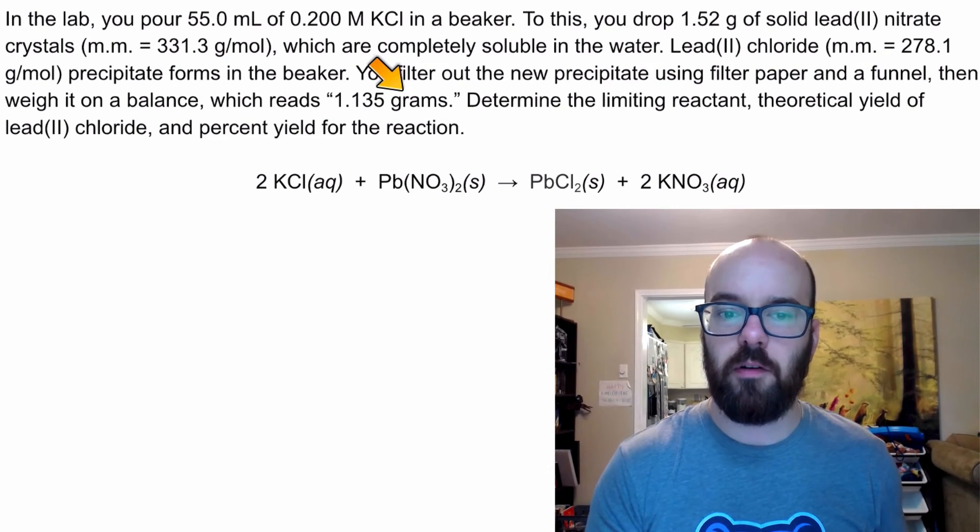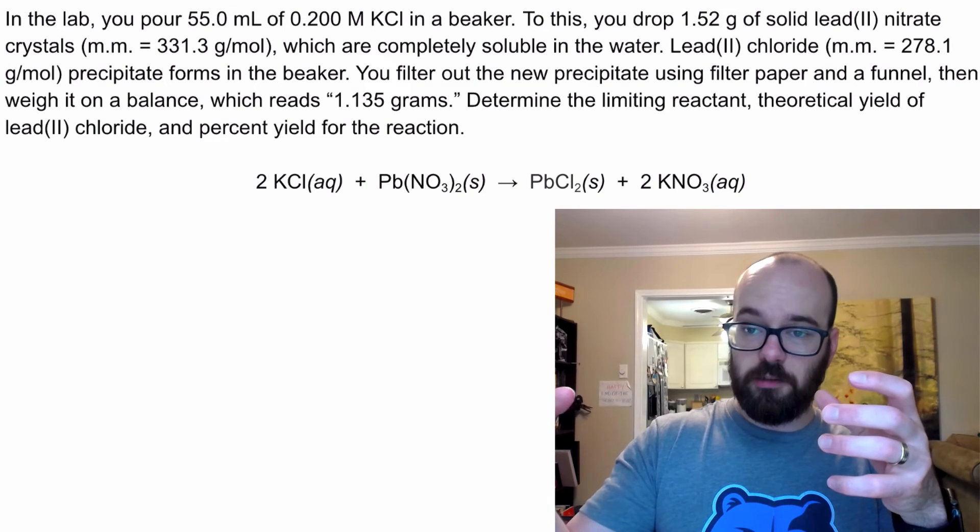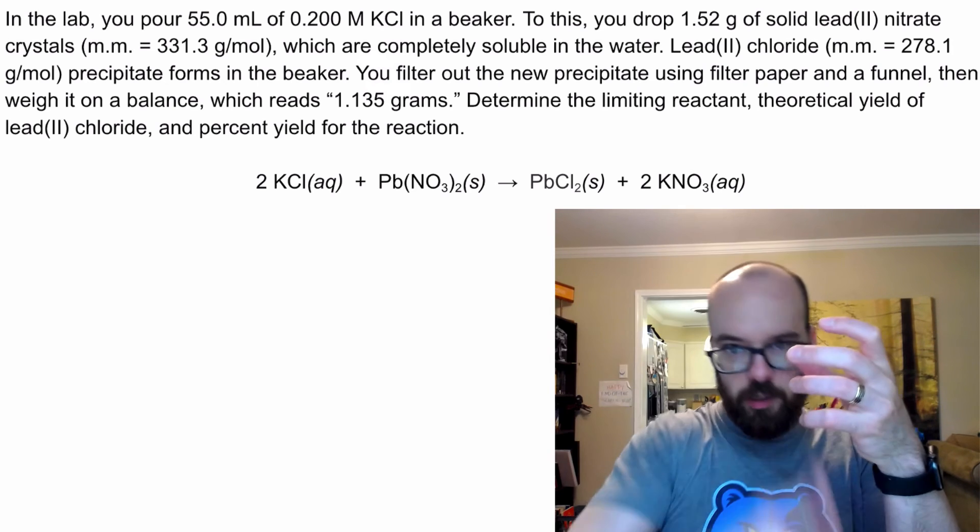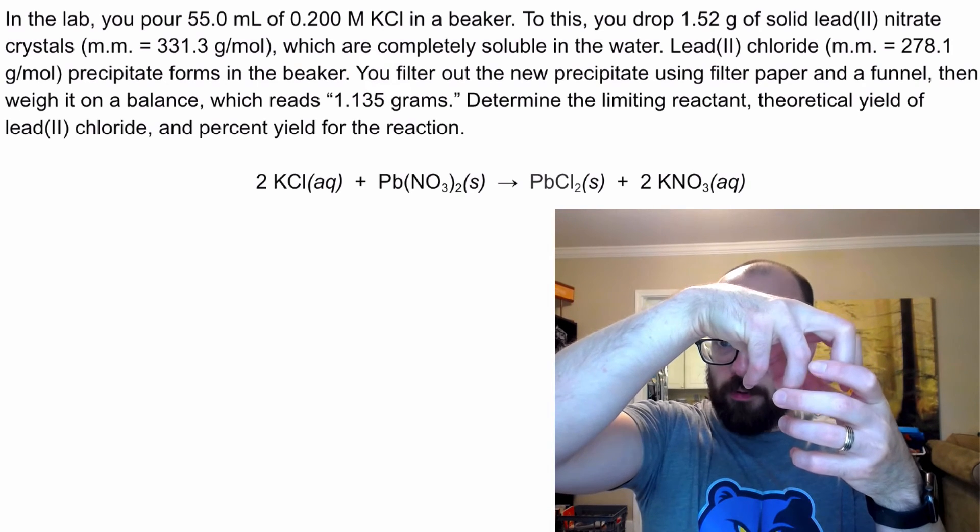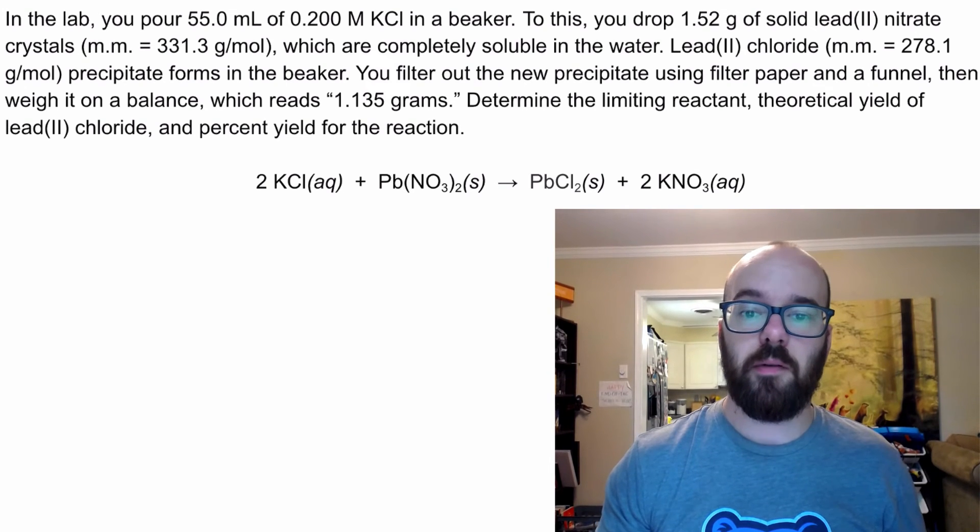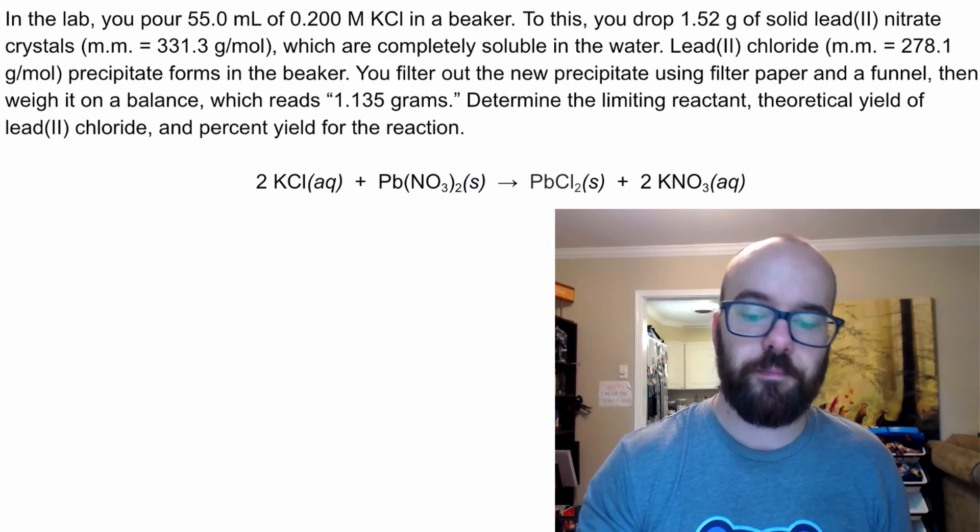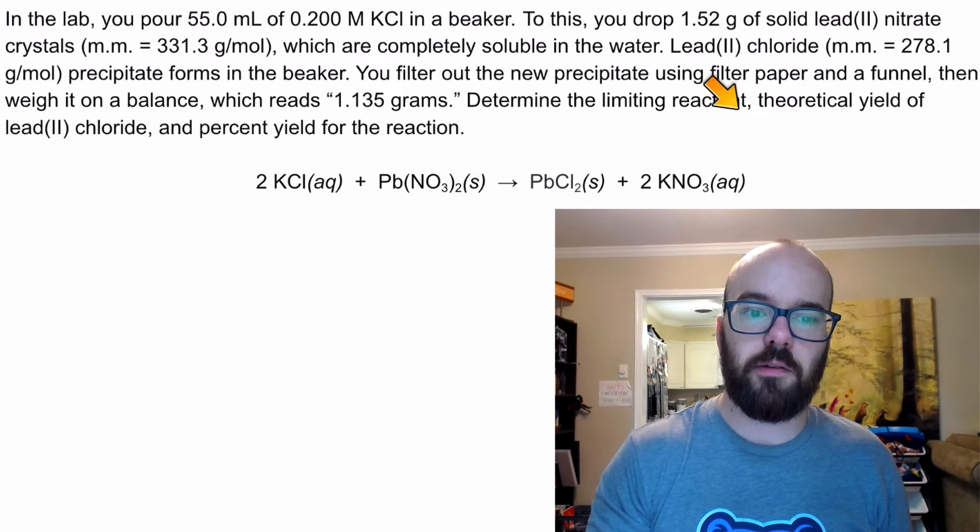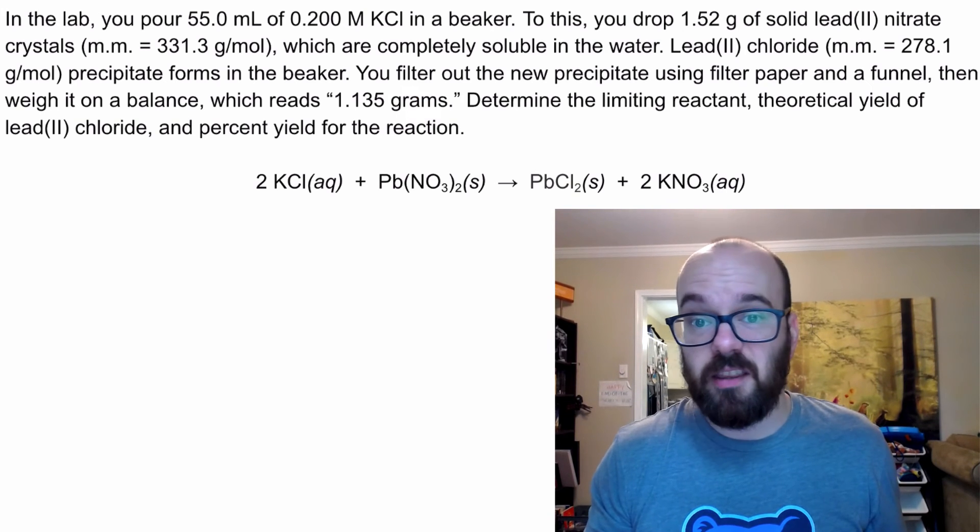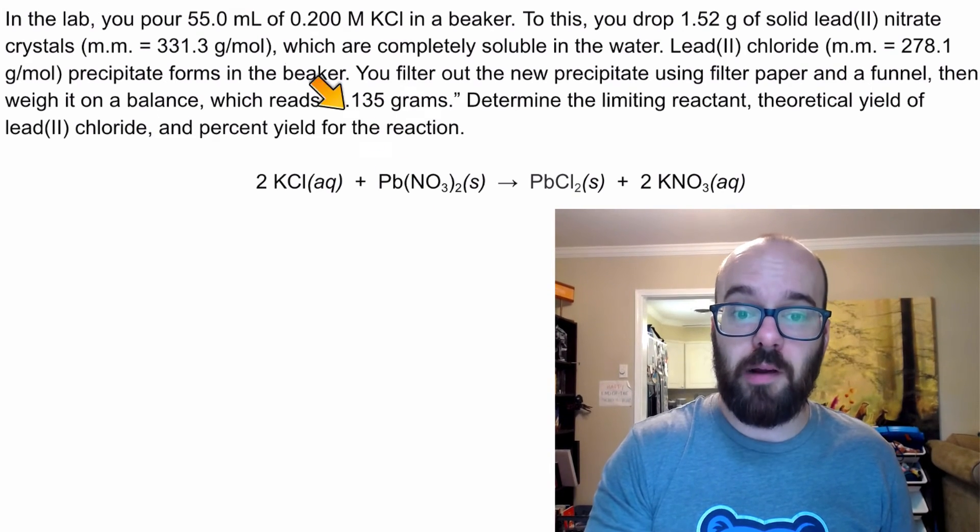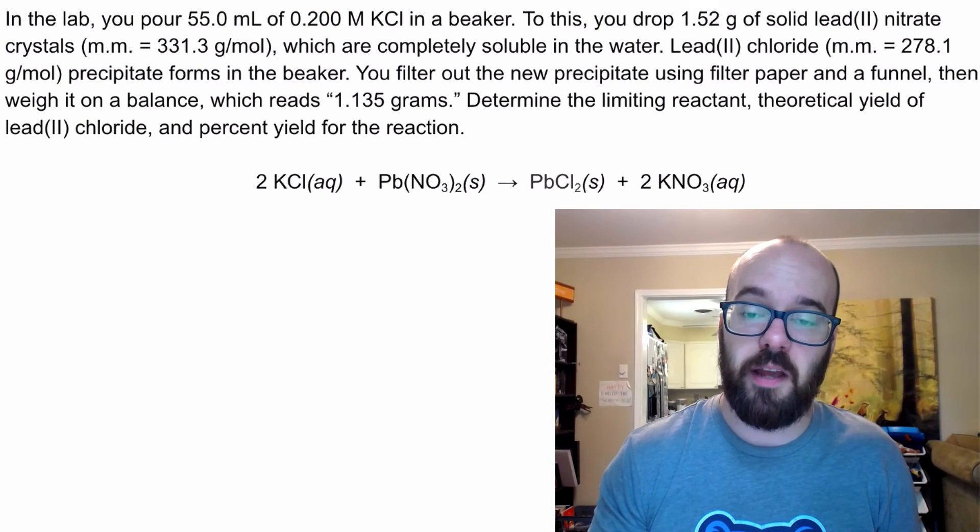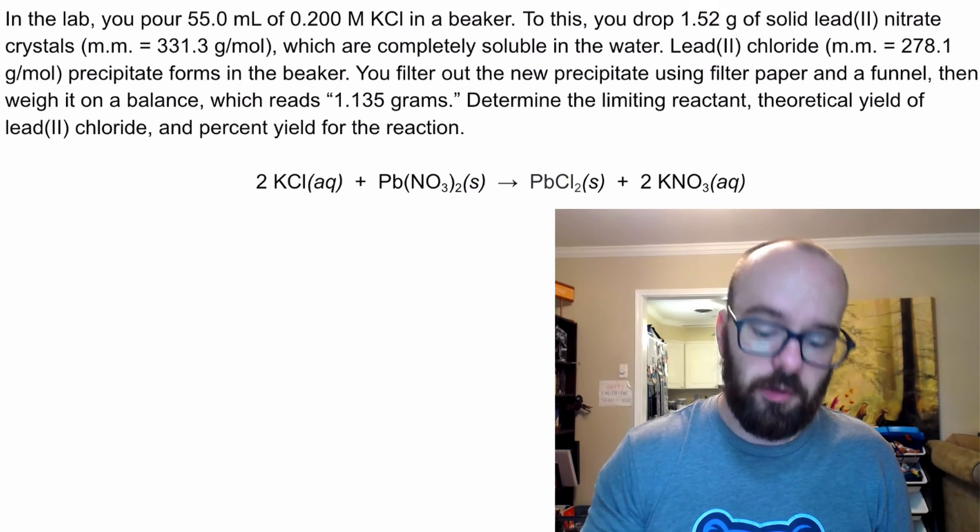You filter out the new precipitate using filter paper and a funnel and weigh it on the balance, which reads 1.135 grams. So we took that solution with the new precipitate. We poured it through a funnel that had filter paper on the top. The liquid went through. It trapped the solid in the top in that filter paper. We would dry that solid to make sure we get all the water out. And then we weighed it on the balance. Determine the limiting reactant, theoretical yield of lead chloride, and the percent yield for the reaction.